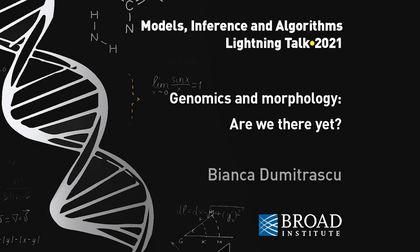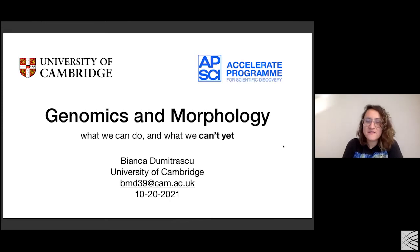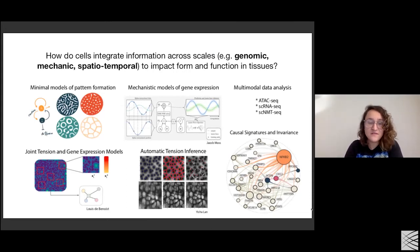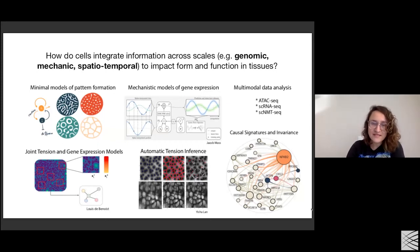I'm especially humbled to be part of this really nice lineup of early career scientists. I will talk to you today about some algorithms that can relate genomics and morphology. This is a theme that's very central to the research going on in my group. We're very interested in understanding how cells integrate information across various scales, and we build multimodal data analysis methods that integrate information across multiple modalities. Today I'll talk about joint tension and gene expression models, as well as automatic tension inference.